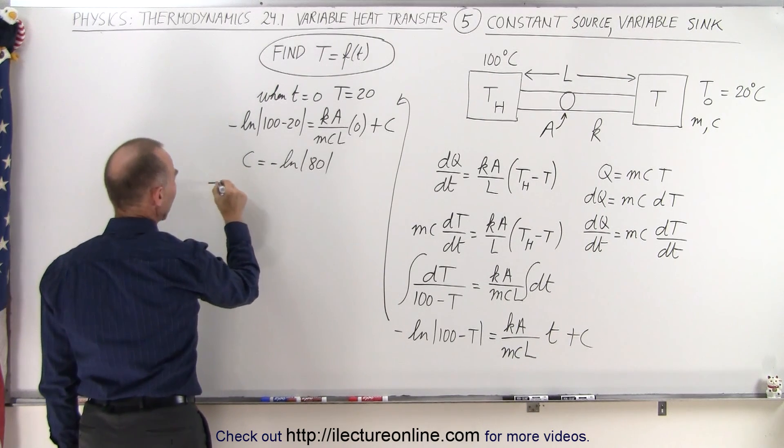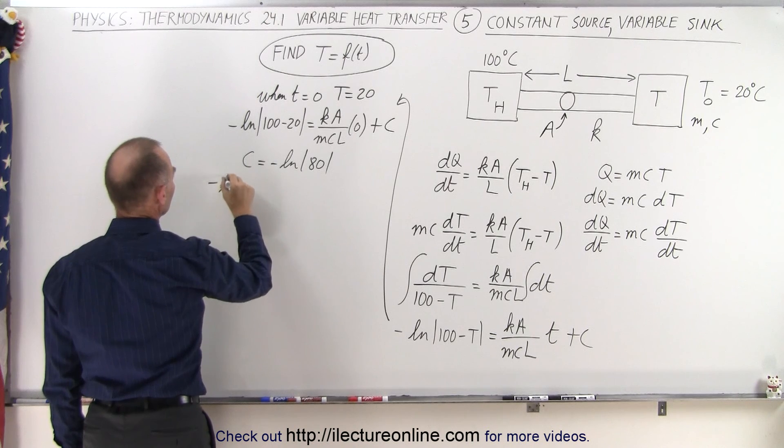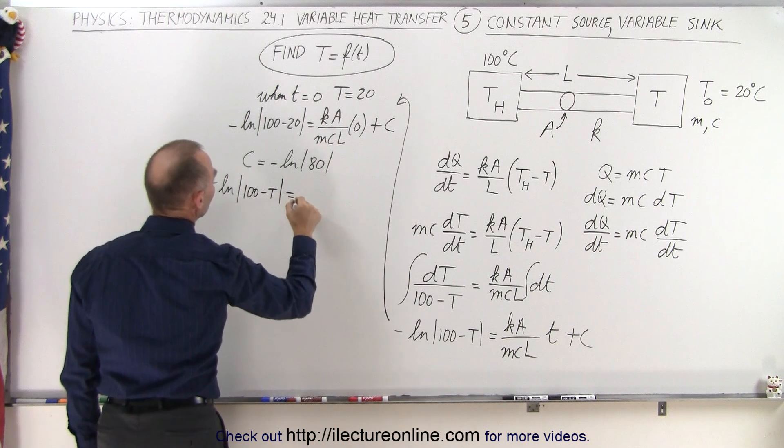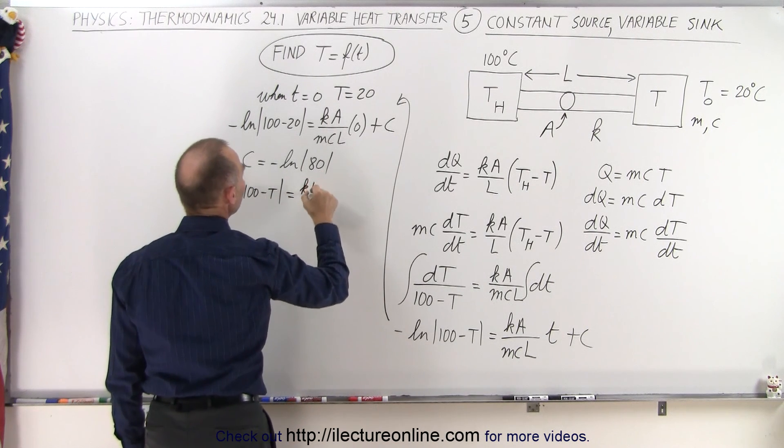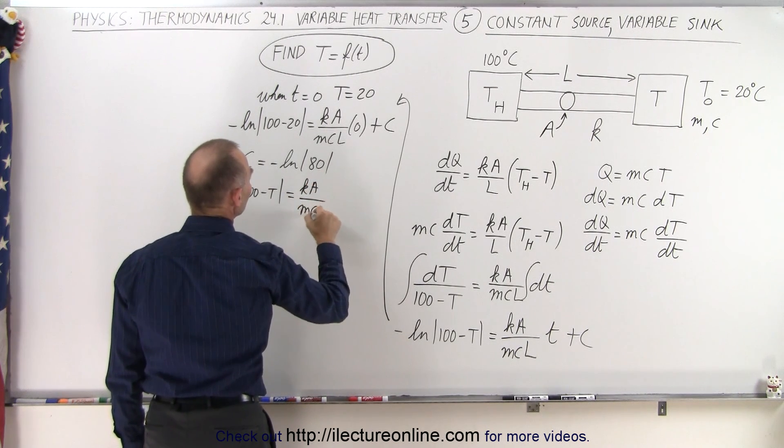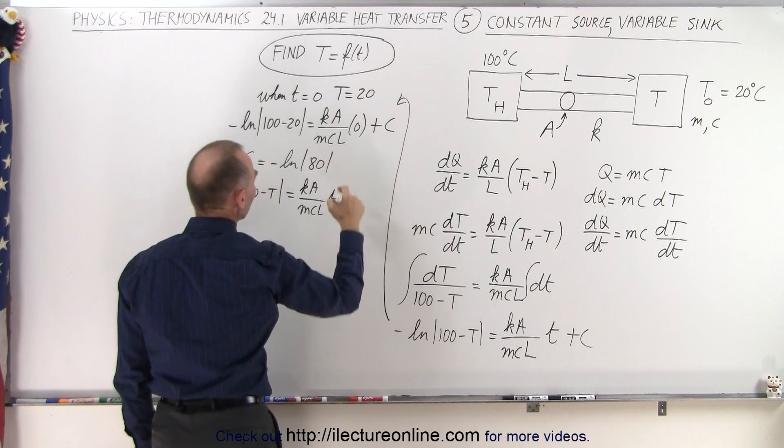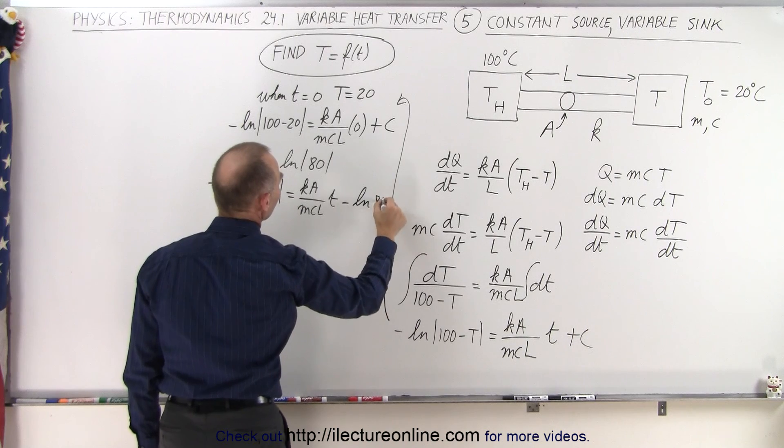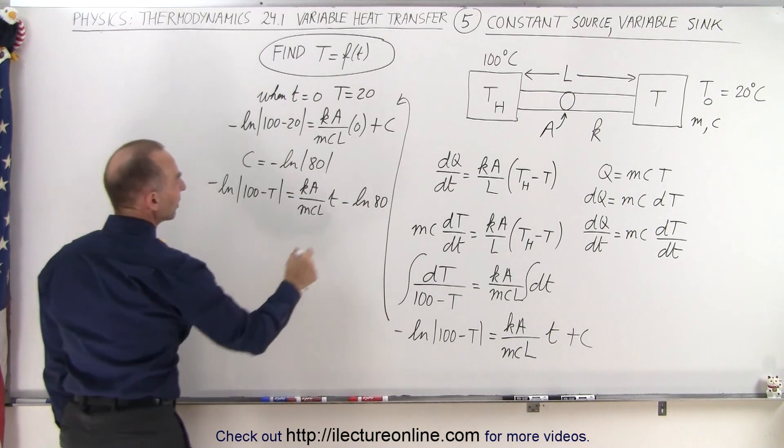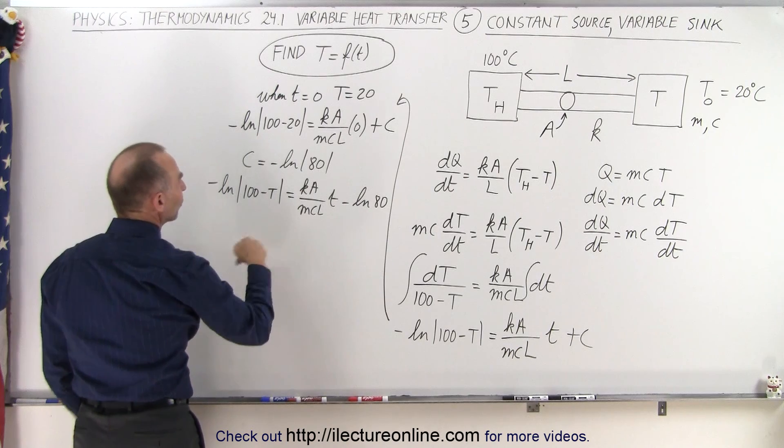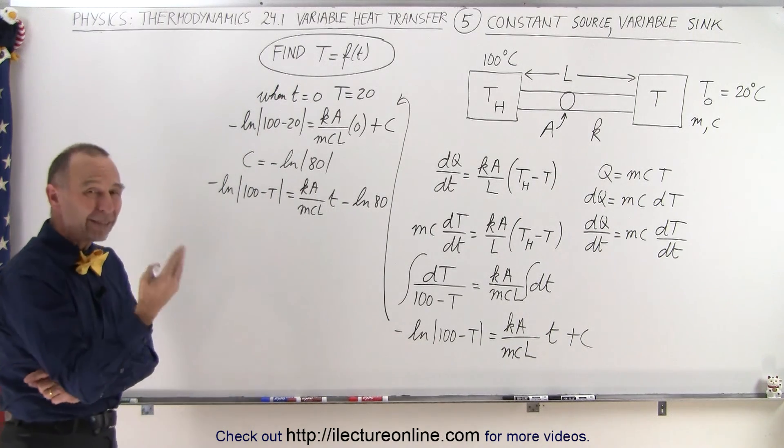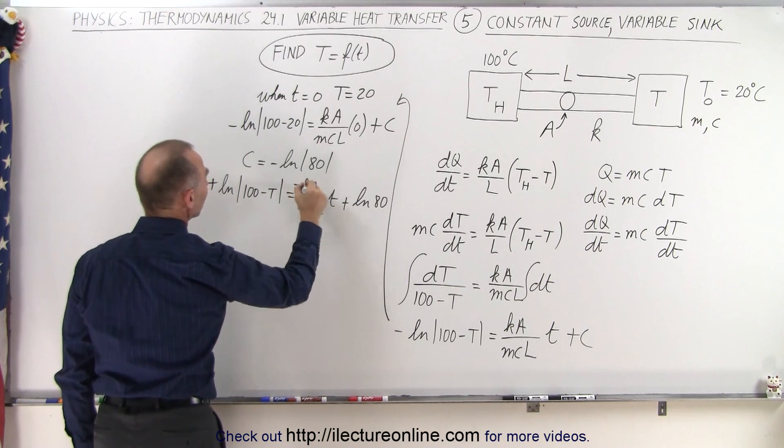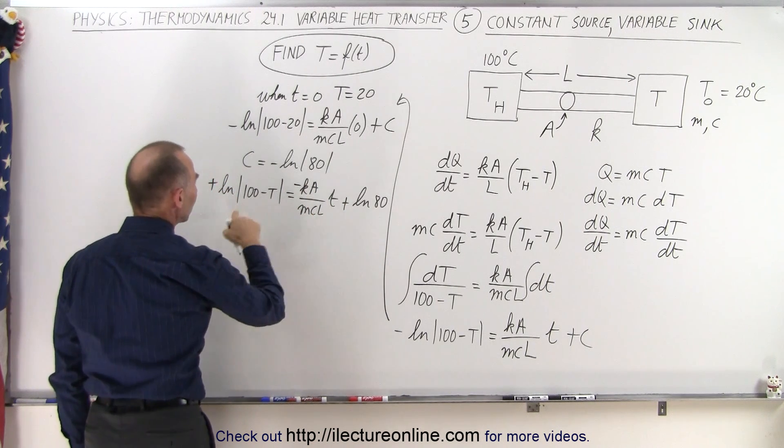So next we end up with minus the natural log. So the next thing I can do is I move this to the other side or what I can do is multiply everything by negative 1 because if I do that this becomes plus, this becomes plus, and this becomes minus. And then when I move this to the other side, on the left side,